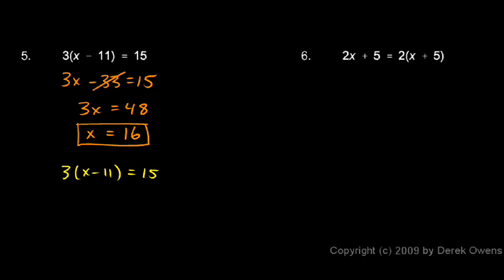We could start by dividing both sides by 3. And on the left the 3's would cancel out and that leaves me with x minus 11 equals, and on the right we have 15 over 3 which is 5.